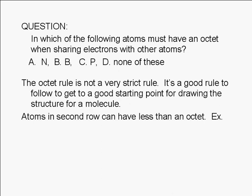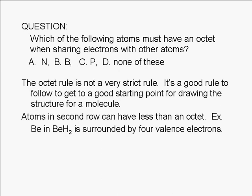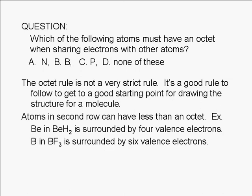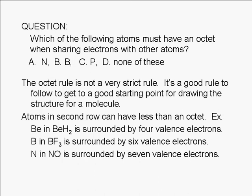Atoms in the second row can have less than an octet. For example, beryllium in BeH2 is surrounded by 4 valence electrons. Boron in BF3 is surrounded by 6 valence electrons. Nitrogen in NO is surrounded by 7 valence electrons.